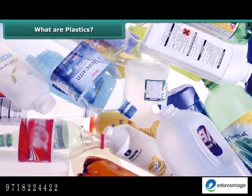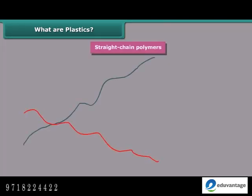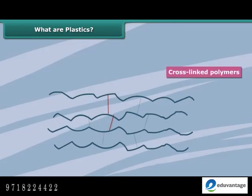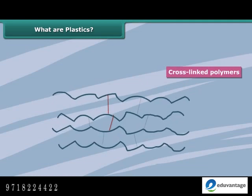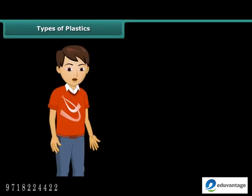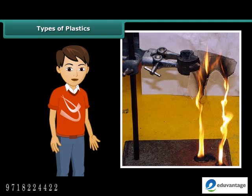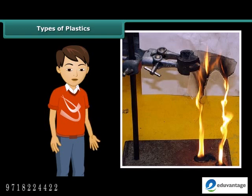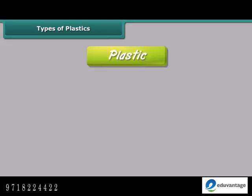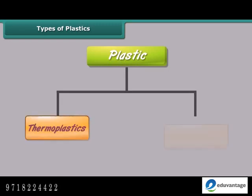Do all the plastics have the same type of arrangement of units? No. Some plastics have a linear arrangement, whereas others are cross-linked. Have you ever observed what happens when a polythene bag is burnt? It melts and you can see its droplets falling off, apart from the noxious smell it produces. Do all plastics melt upon burning? There are two types of plastics based on their reaction upon being heated: thermoplastics and thermosetting plastics.